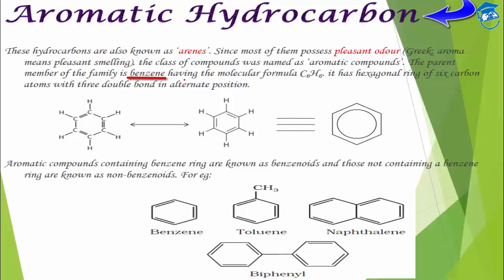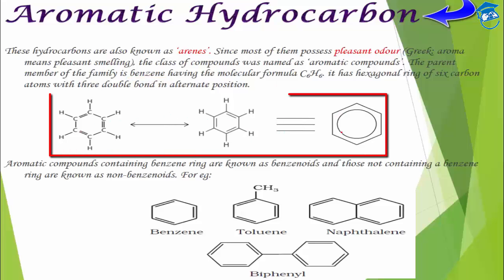The parent member of this family is benzene, and its formula is C6H6. It is represented as a hexagonal ring structure. Benzene has got six carbon atoms and six hydrogen atoms, and the double bonds are alternate — they can be placed between these two carbons or between those two carbons.